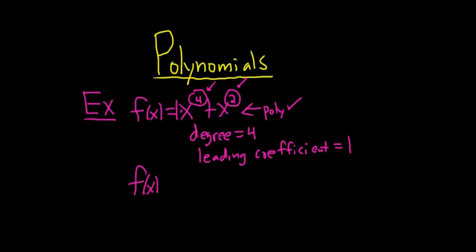For example, here's another one: 2x to the seventh plus x. This is really x to the 1, so it's OK. You have only whole numbers, so it's a polynomial.